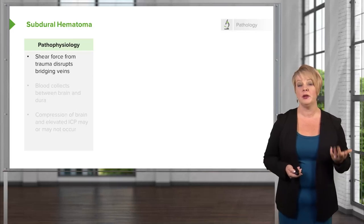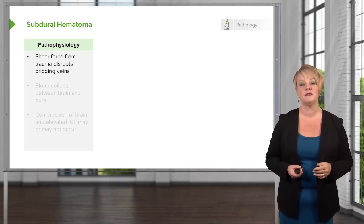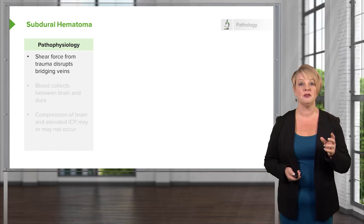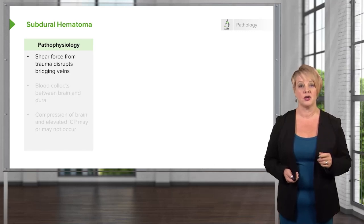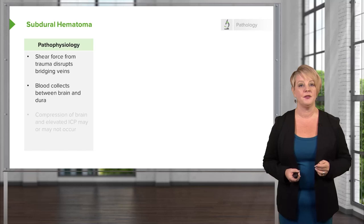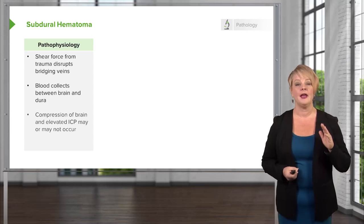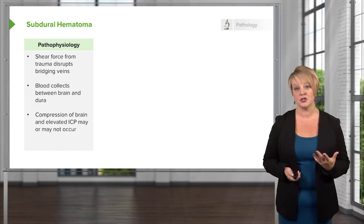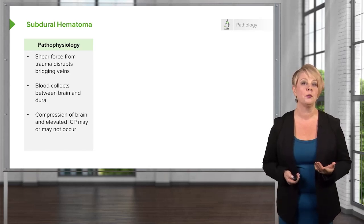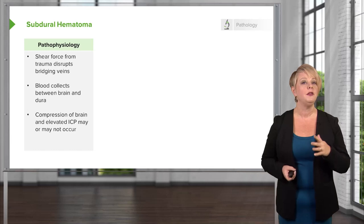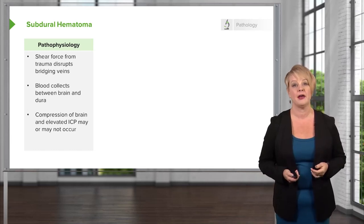The pathophysiology of subdural hematoma is a little bit different. In the case of subdural, some type of shear force disrupts bridging veins between the brain and the dura. This allows blood to collect in that region between the brain and the dura. Eventually, if the bleed gets large enough, you may see compression of the brain and elevated intracranial pressure. But because we're not dealing with arterial bleeding, these accumulate much more slowly and in many cases will not produce mass effect.